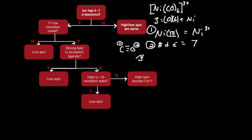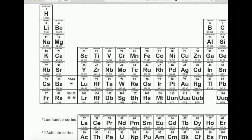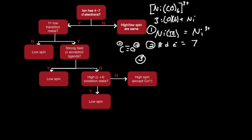Now let's go to the flowchart — this is step 3. We need to figure out if it's high spin or low spin. Does the ion nickel 3+ have 4 to 7 d electrons? Yes. Is it a first-row transition metal? Yes, nickel is in the first row of the transition metal section. Now we ask: is it a strong field ligand? The ligand is carbonyl, or carbon monoxide. There are three strong field ligands important to know: triphenylphosphine, cyanide, and the carbonyl ligand CO. So the answer is yes — this is automatically low spin.